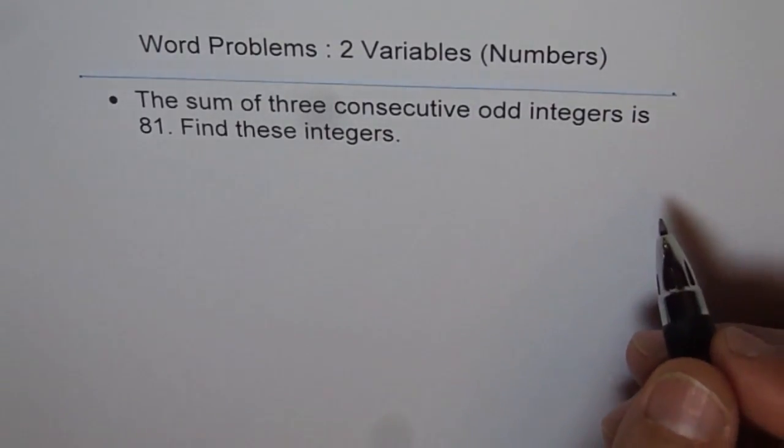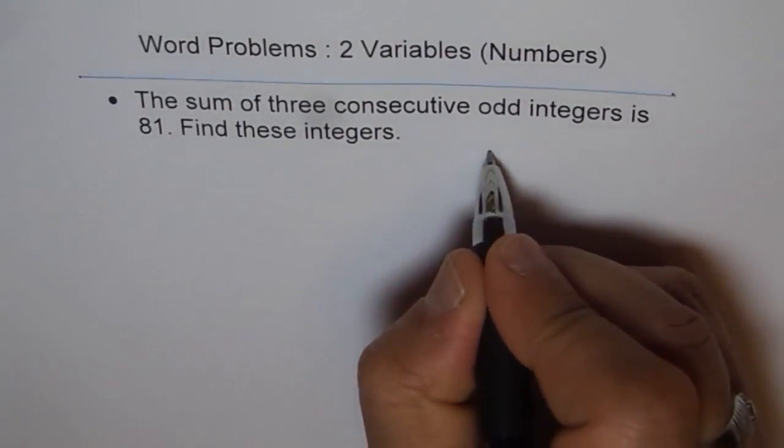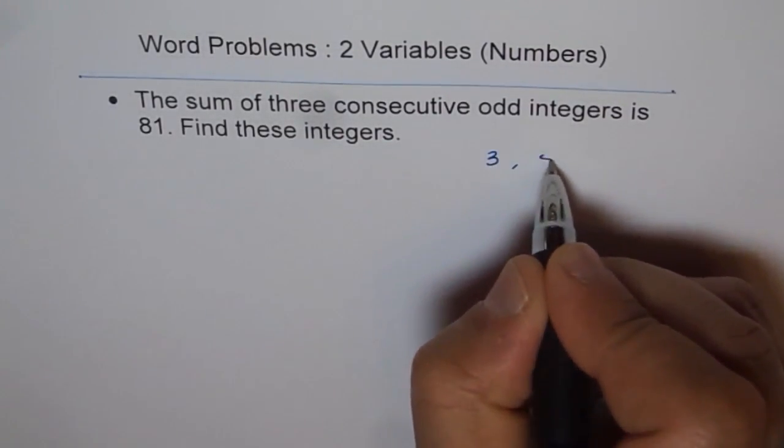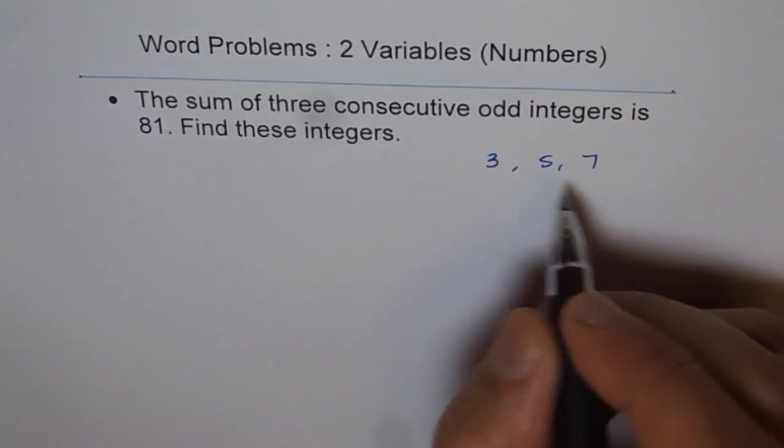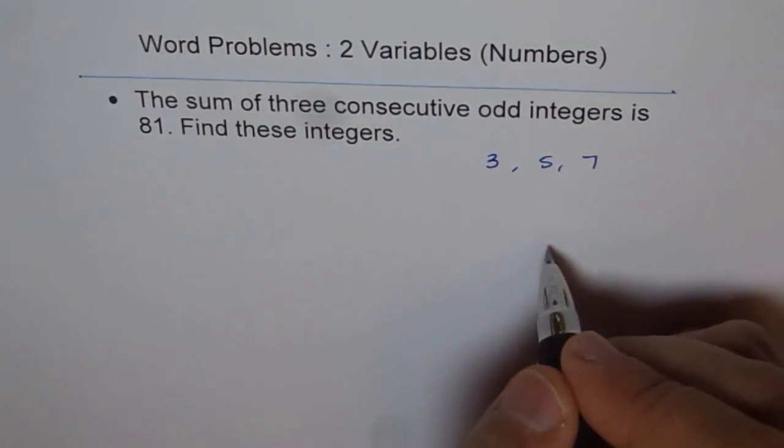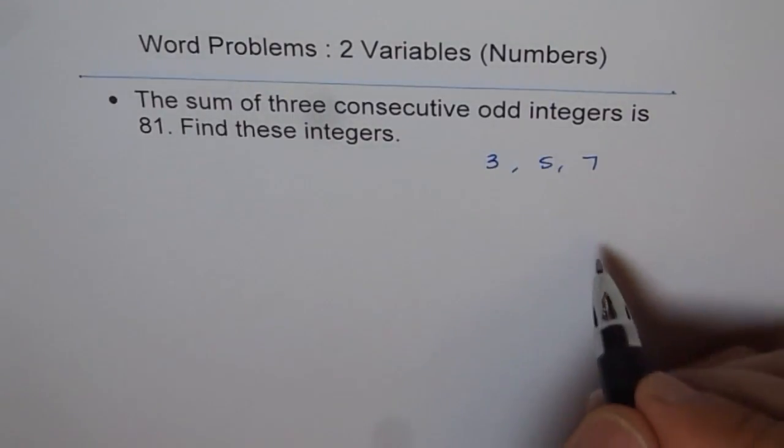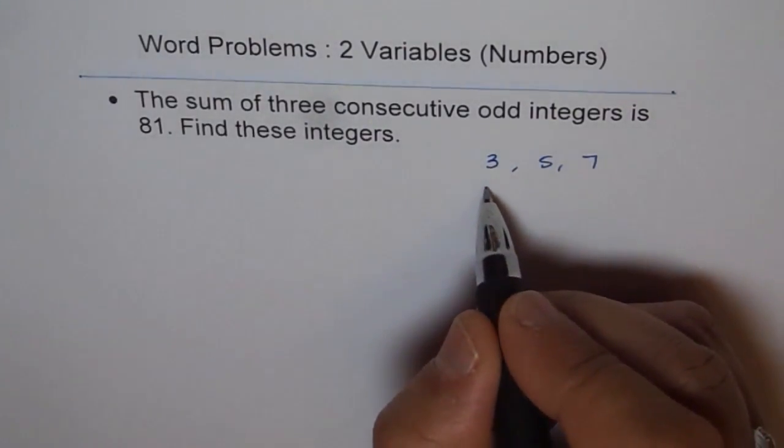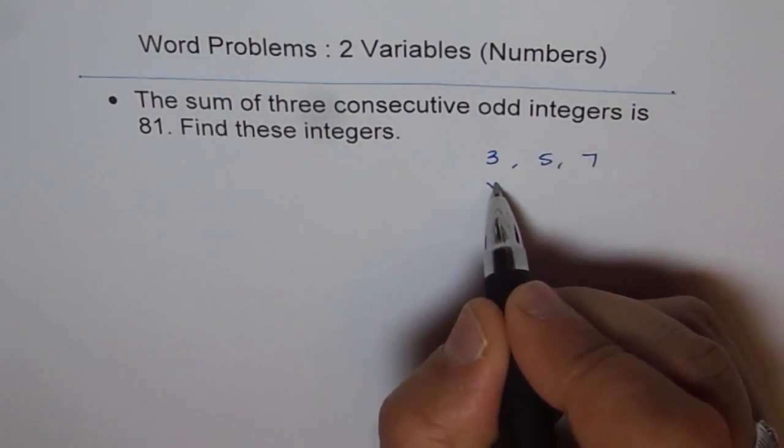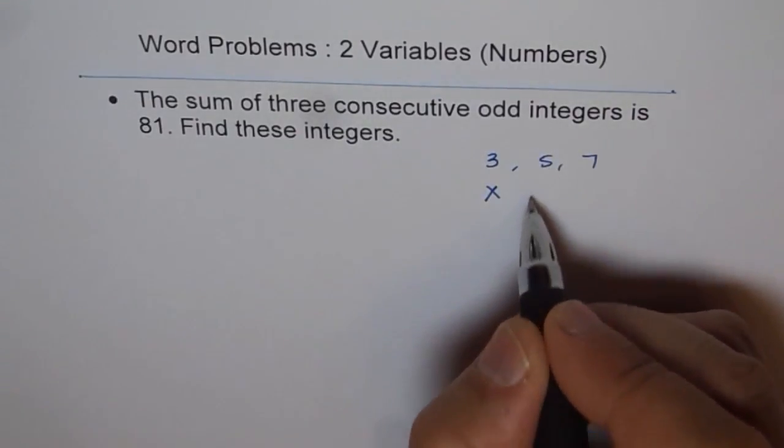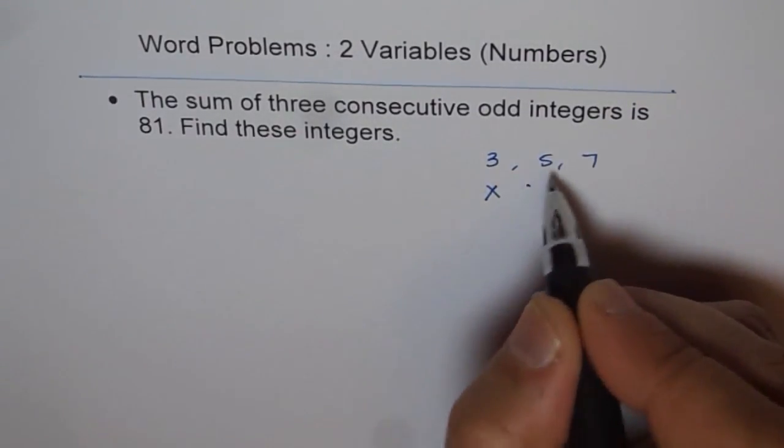Let me write down - let's say the integers are 3, 5, 7. These are odd integers, all are odd. You will see a pattern - it is skipped by one. If I write the value of 3 as x in terms of variables, then the next term is x+2.